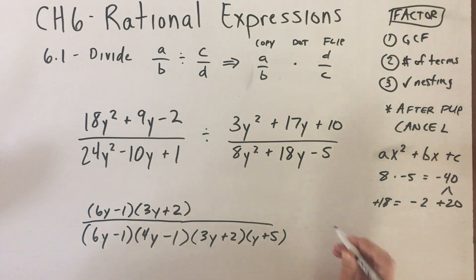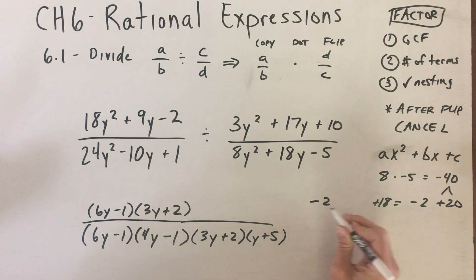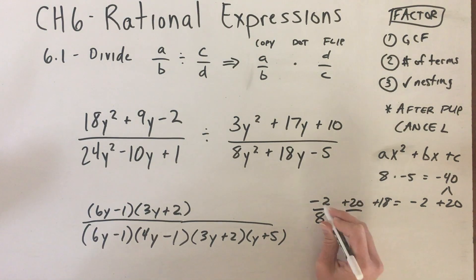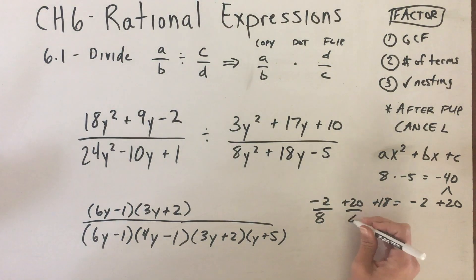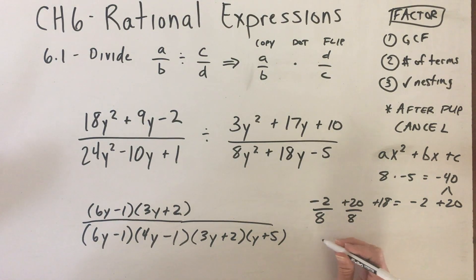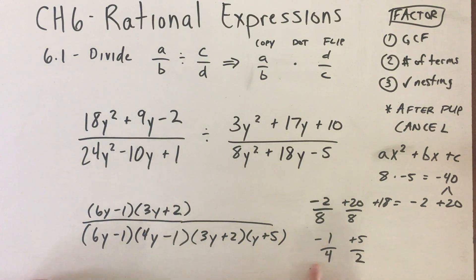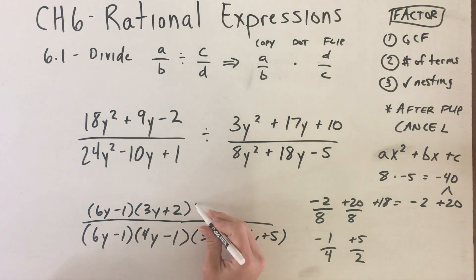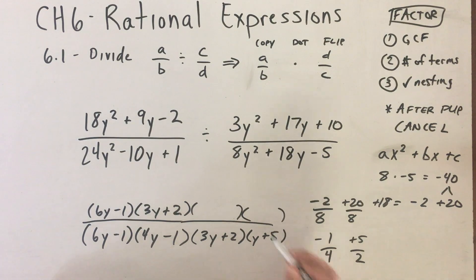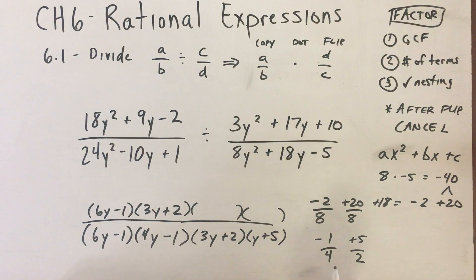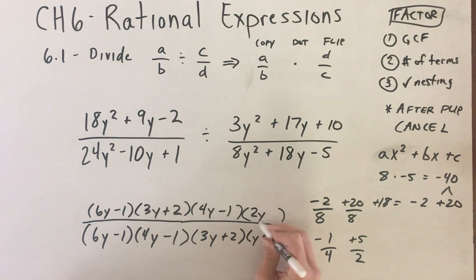I write those factors over A, which is 8: negative 2 over 8 and positive 20 over 8. Always keep the signs because they tell you the sign in the factor. Reducing: negative 2/8 reduces to -1/4, and 20/8 reduces to 5/2. These fractions represent the factors. Since we're flipping D, its factors go on the top: (4y - 1) and (2y + 5).